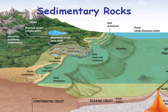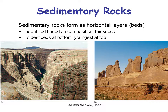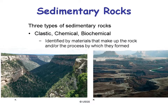Earth science — sedimentary rocks. This lecture covers how sedimentary rocks are formed and how to identify their characteristics. Sedimentary rocks form as horizontal layers or beds, identified by composition and thickness. Older beds are at the bottom and younger at the top. There are three types of sedimentary rocks: clastic, chemical, and biochemical sedimentary rocks, divided by the type of material that makes up the sedimentary rock.